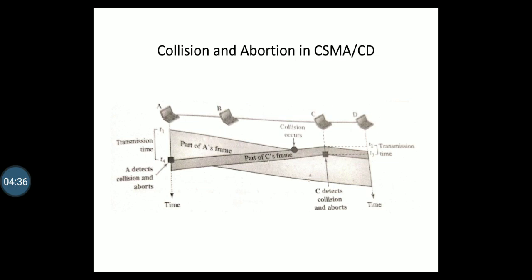There is a diagram showing collision and abortion in CSMA/CD. Knowing the time durations for both transmissions, we can see the complete graph. It shows where A detects the collision and aborts, where the collision occurs, where C detects the collision and aborts, and the areas representing parts of A's frame and C's frame.